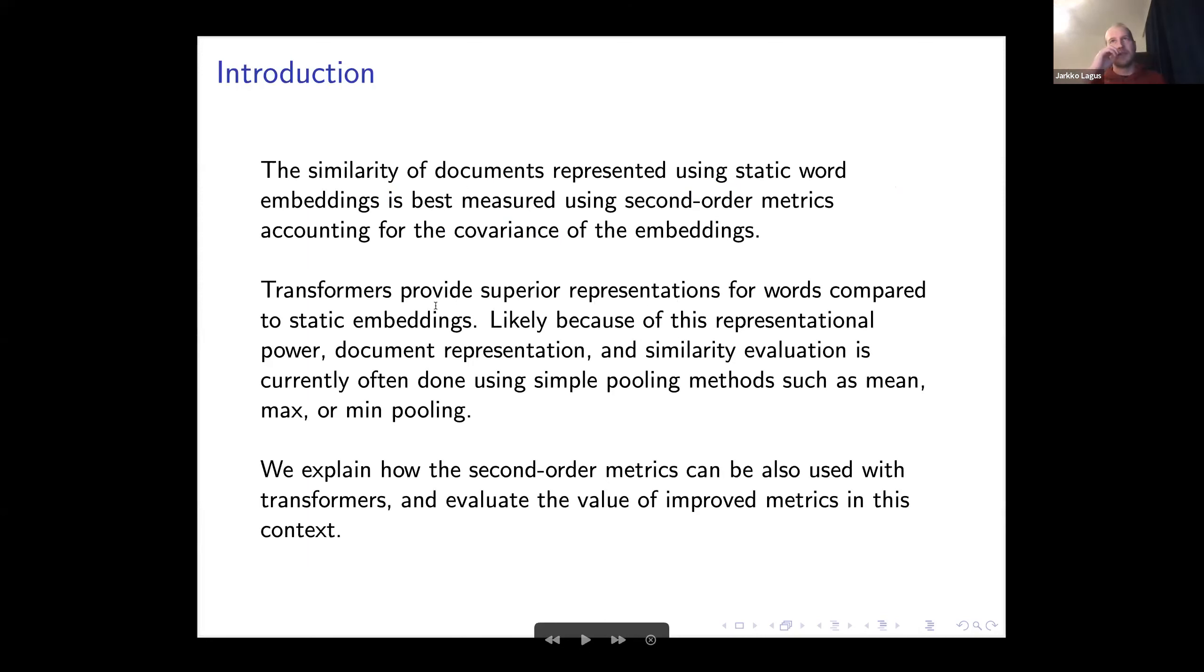Similarity, when measured using static word embeddings, is usually best measured using second-order metrics, which I talked about in the previous presentation, and especially using the covariance of these embeddings.